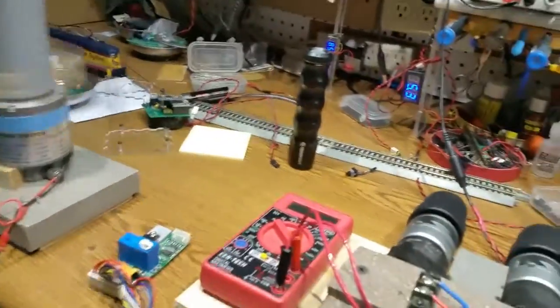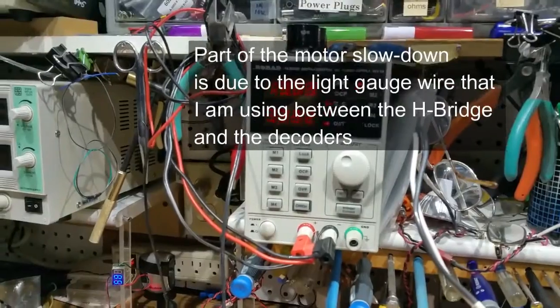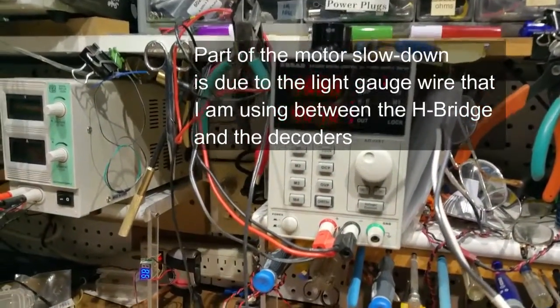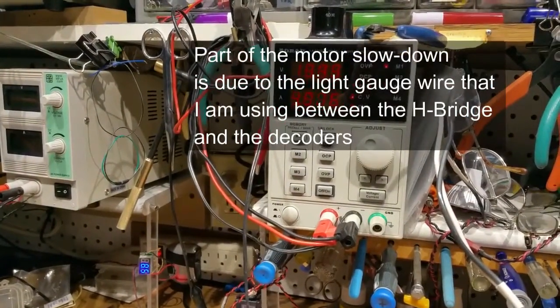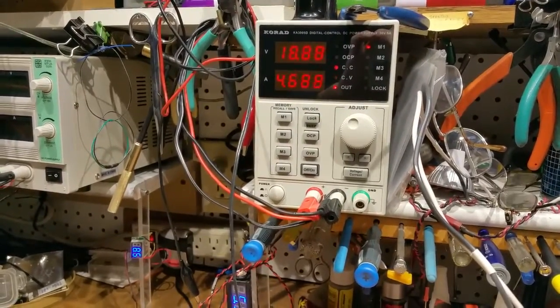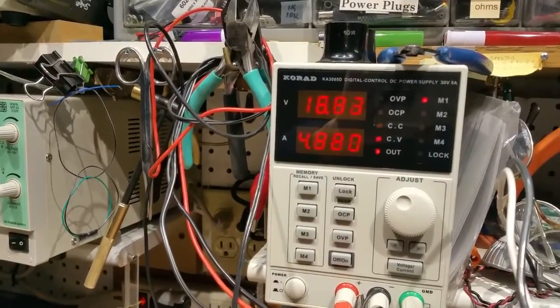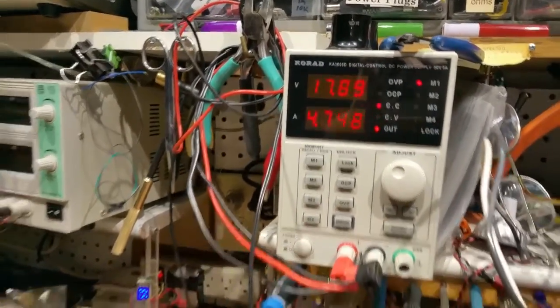Now you can see that the drill motors slowed down a little bit because the power supply is having a little trouble supplying as much current as I'm asking it to. Let's see if we can bring those up just a little bit more. Okay, we're up to almost 5 amps at about 18 volts.